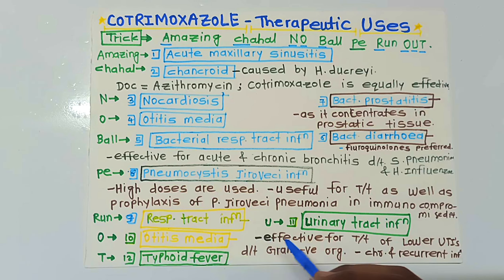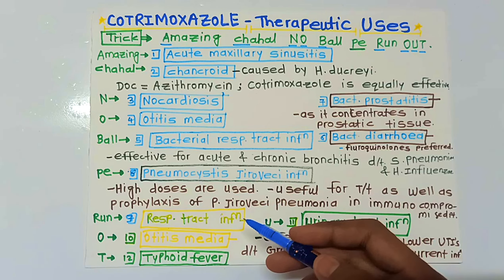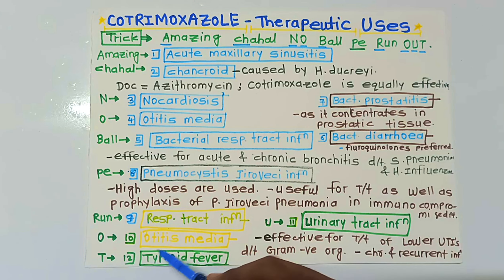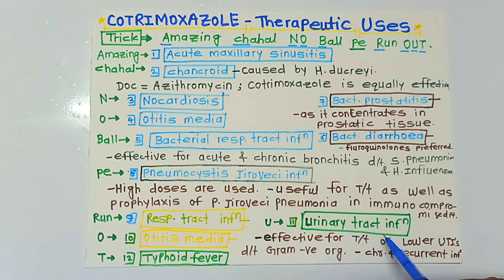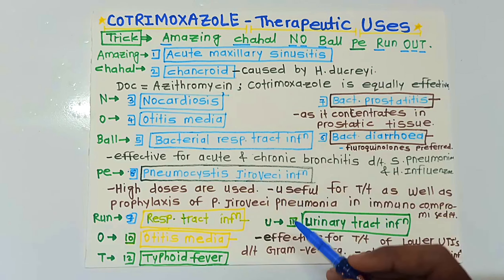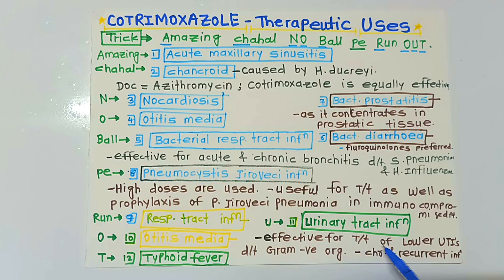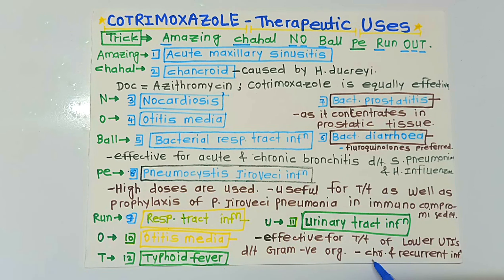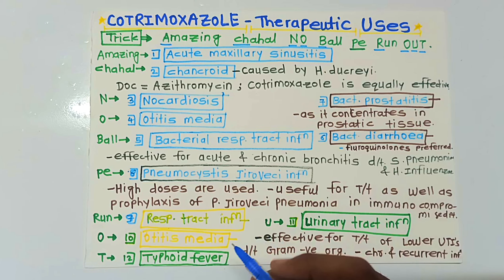R is for respiratory tract infections, and O is for otitis media — both already covered. U is for urinary tract infections. Co-Trimoxazole is effective for the treatment of lower urinary tract infections due to gram-negative organisms, and it is also effective in chronic and recurrent urinary tract infections.